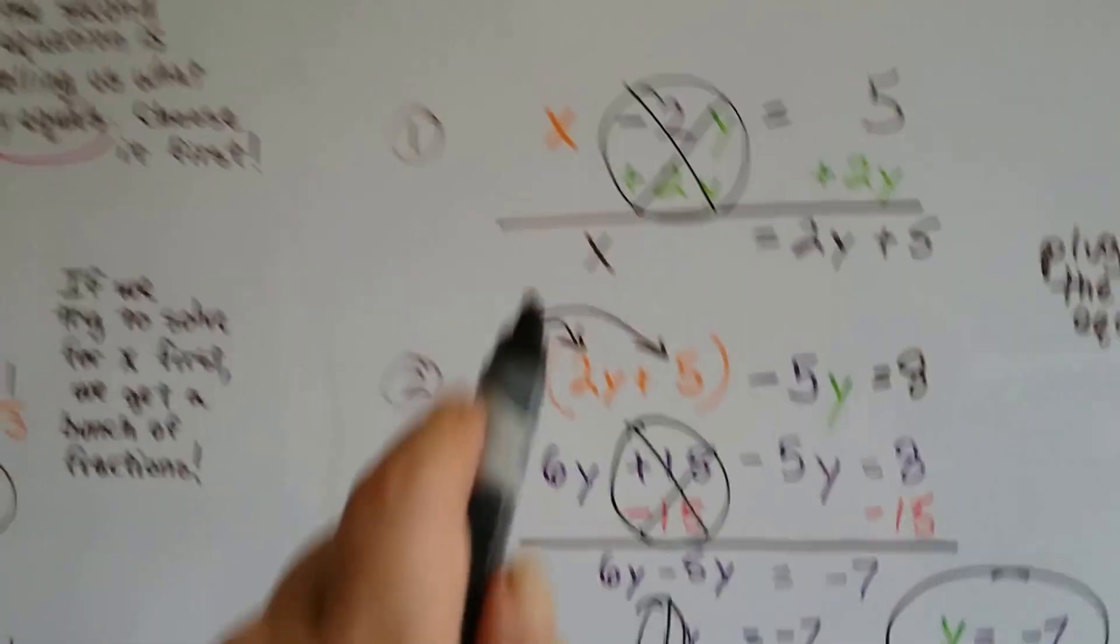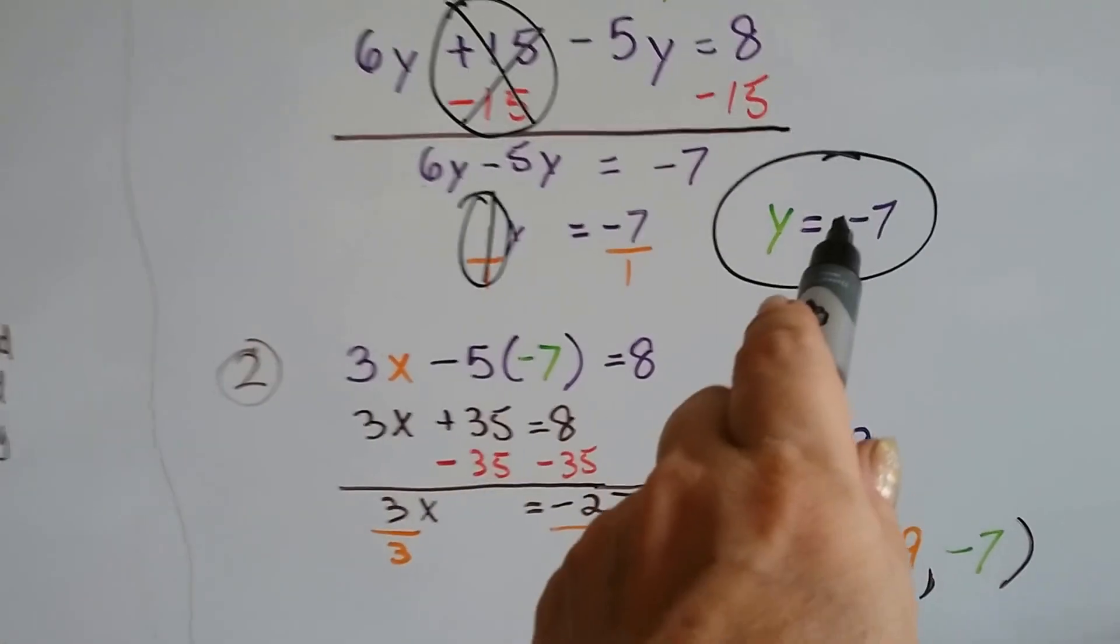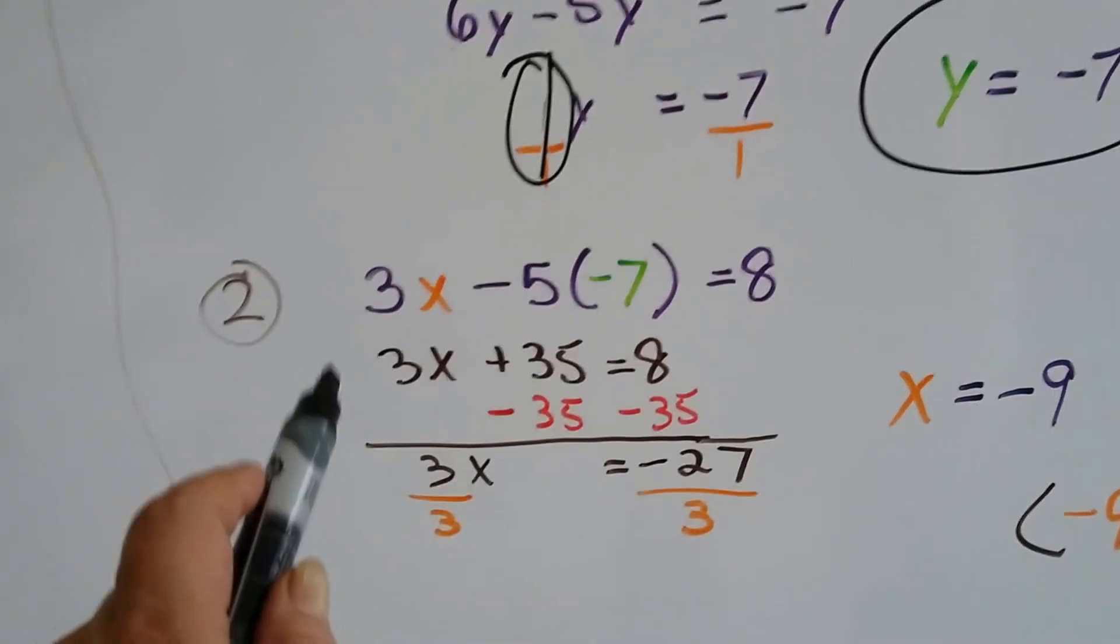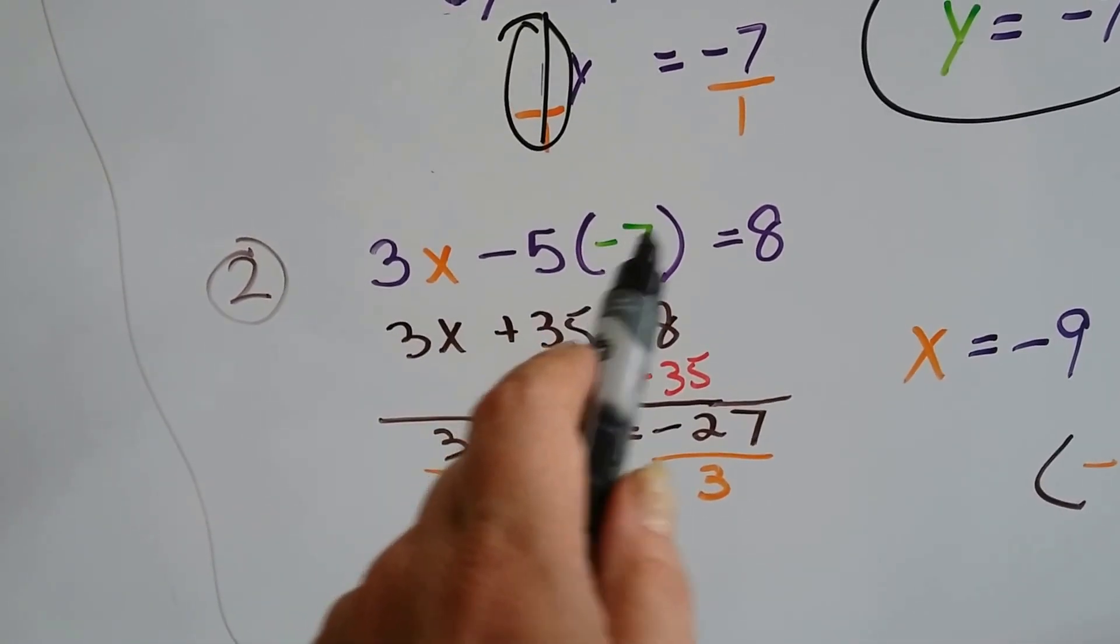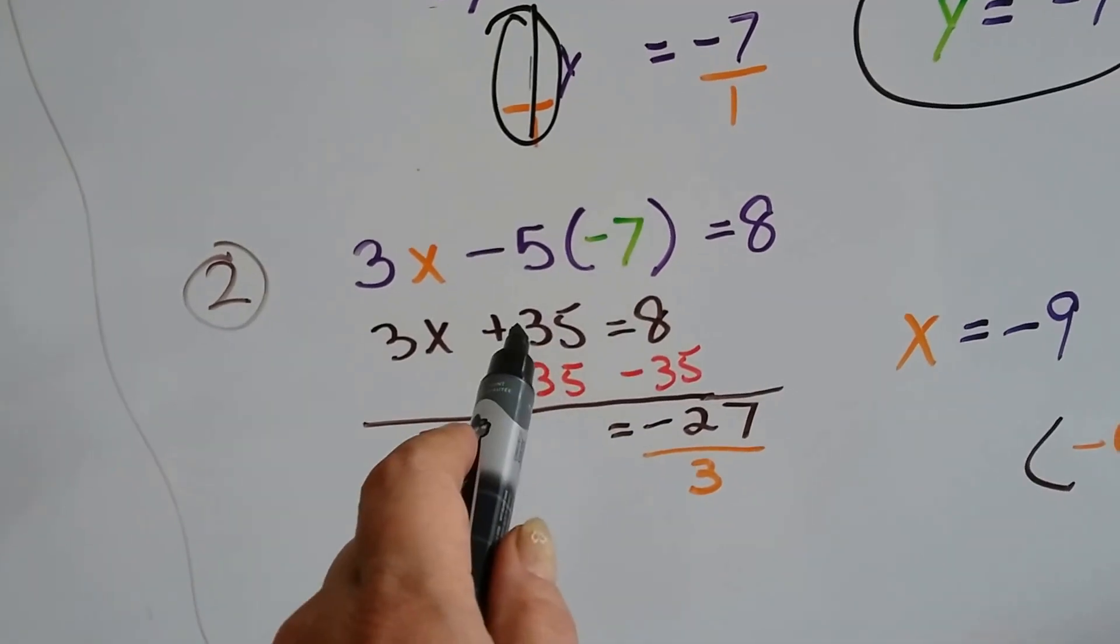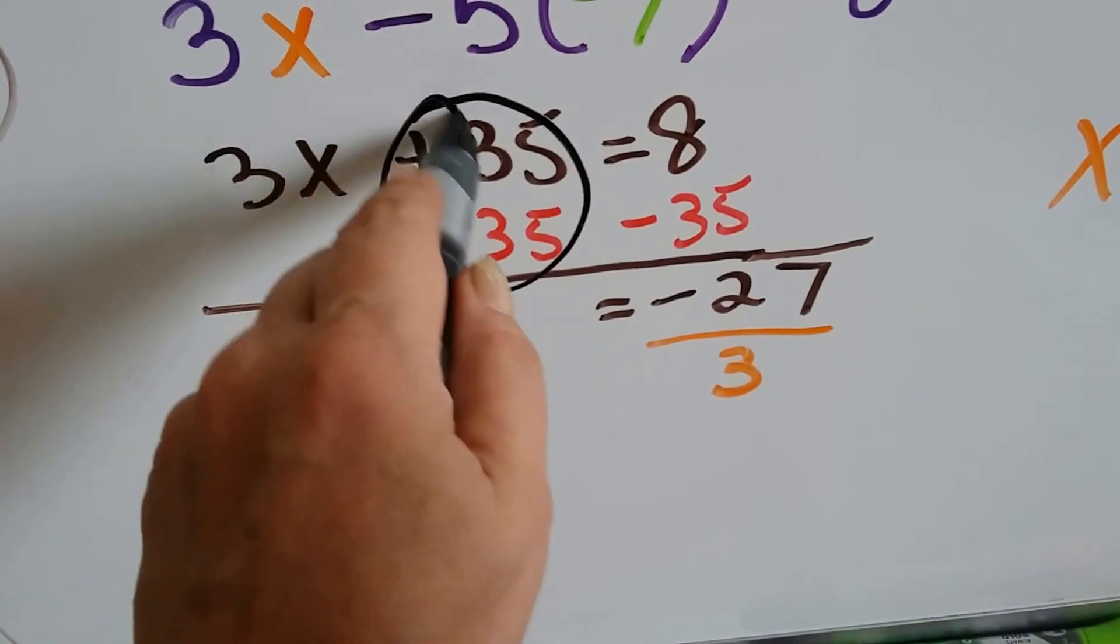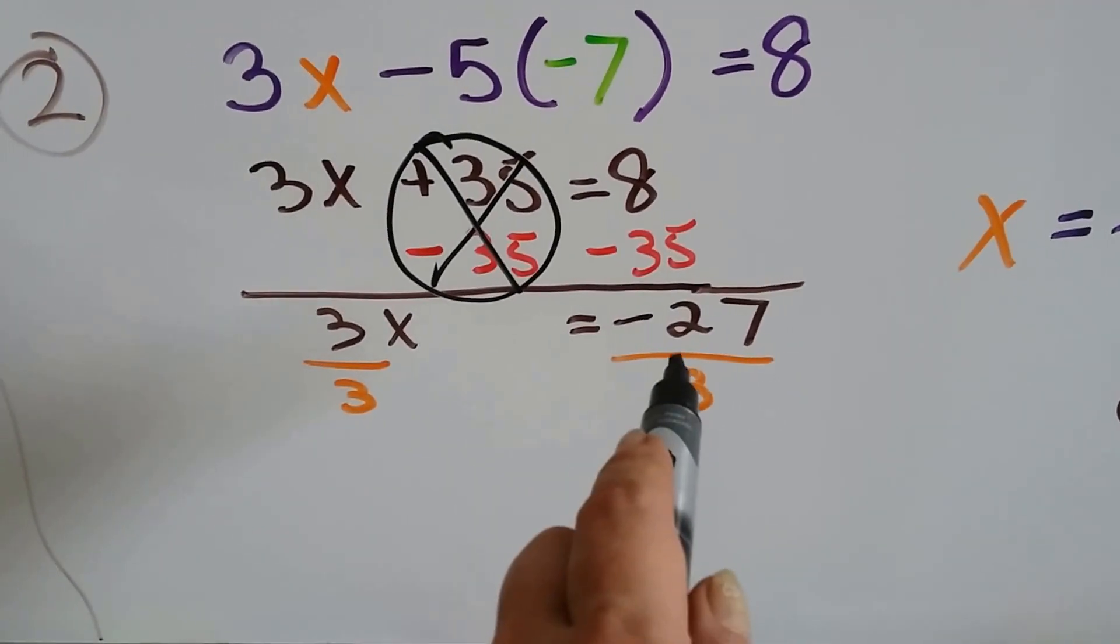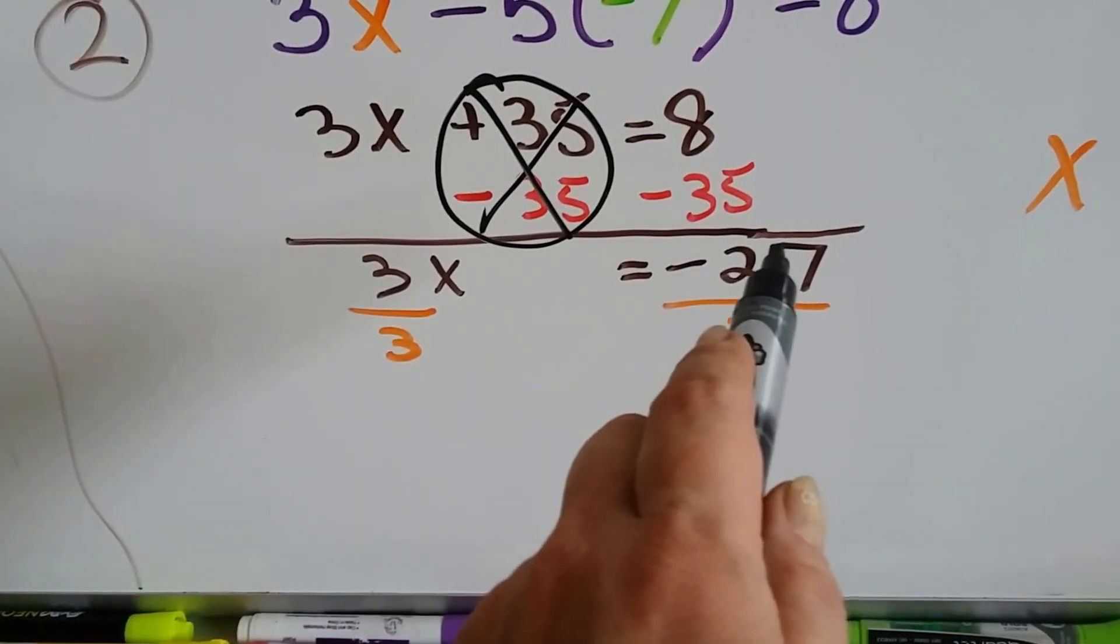Now we can go to the second equation, 3x - 5y equals 8, and we can plug in this -7 for the y. So 3x minus 5 times -7 equals 8. We have a -5 times a -7, that's a positive 35. And if we subtract 35 from each side of the equation, that makes a zero pair, and 8 take away 35 is a -27.